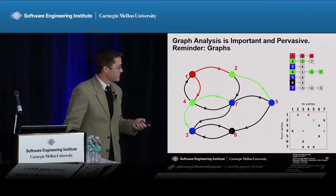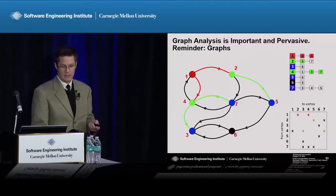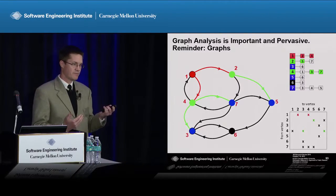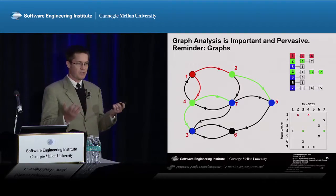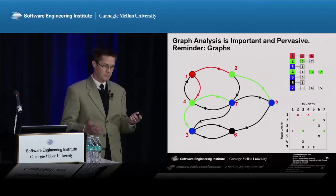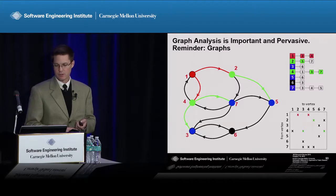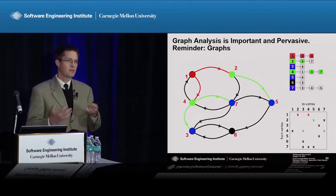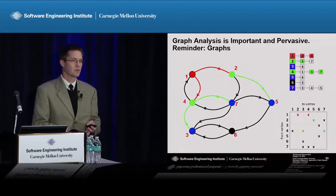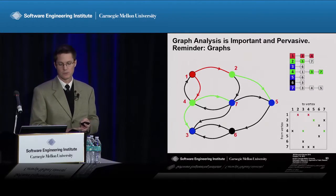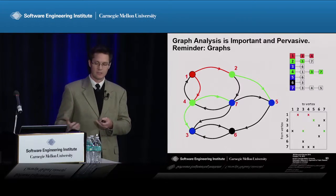A brief review of what a graph is: graphs consist of nodes and edges — a fundamental data structure in computer science. The nodes can be anything, like people in a social network or computers in a computer network. The edges could be connections between those people, like a friend network or communication pattern. There's a great amount of complexity you can build into graphs.